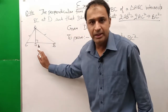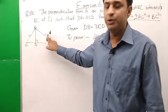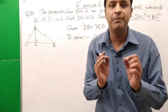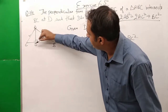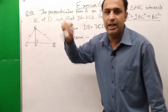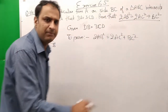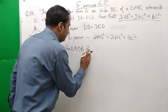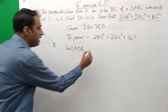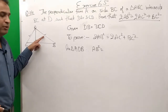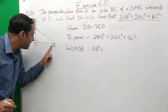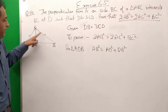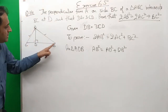We have right angle triangles here. For AB, the hypotenuse is AB in triangle ADB, and for AC, the hypotenuse is AC in triangle ADC. So in triangle ADB: AB² = AD² + DB². This is equation 1.